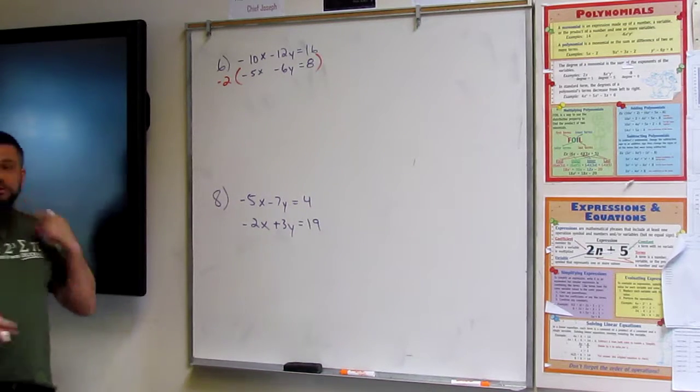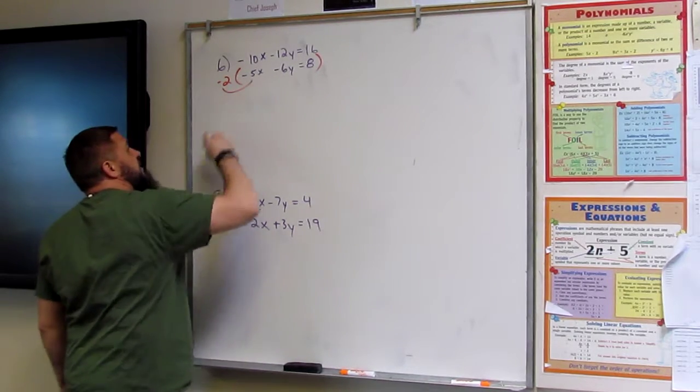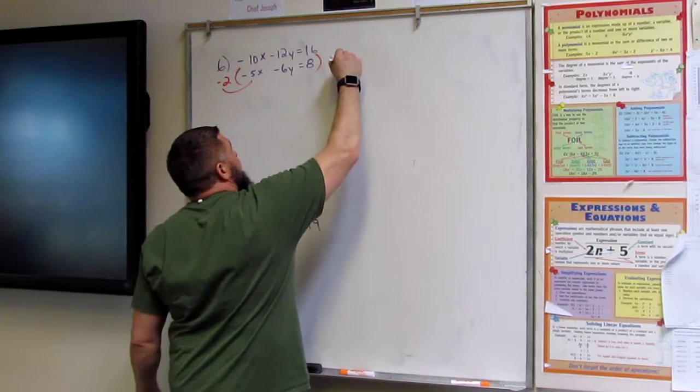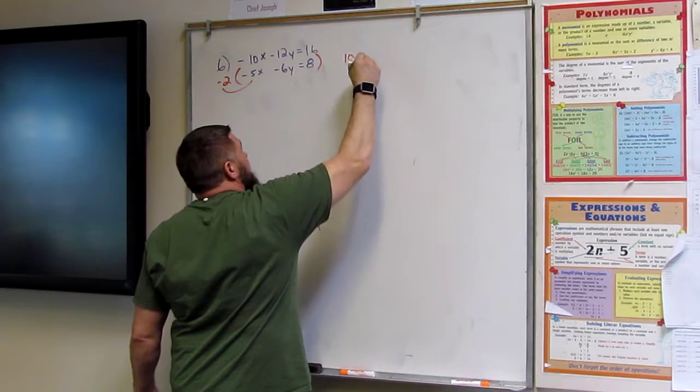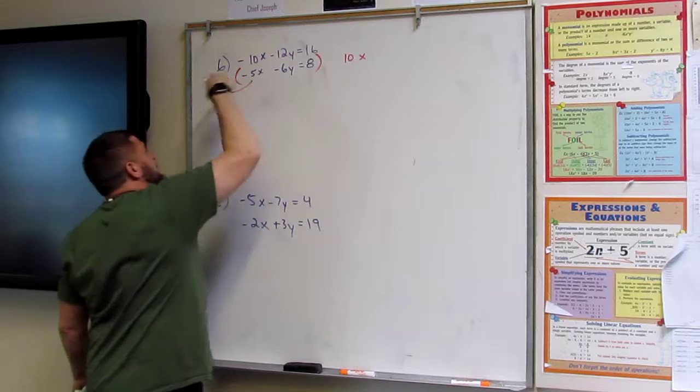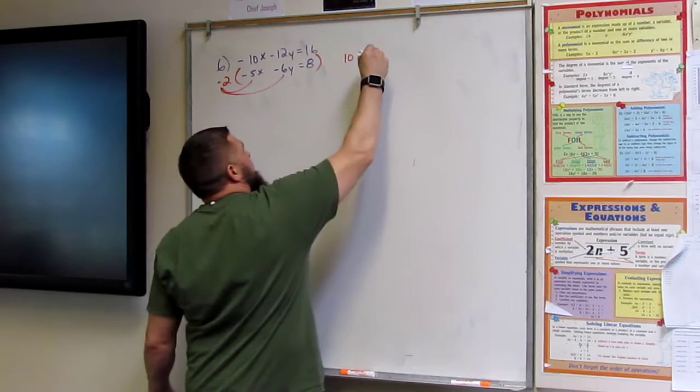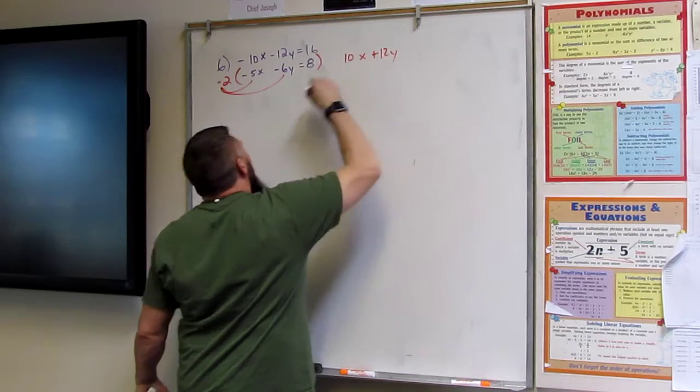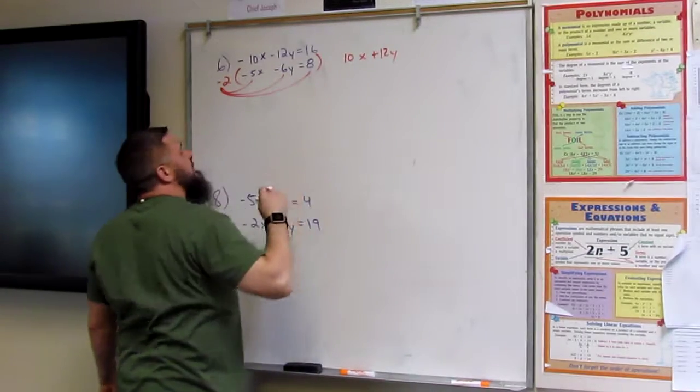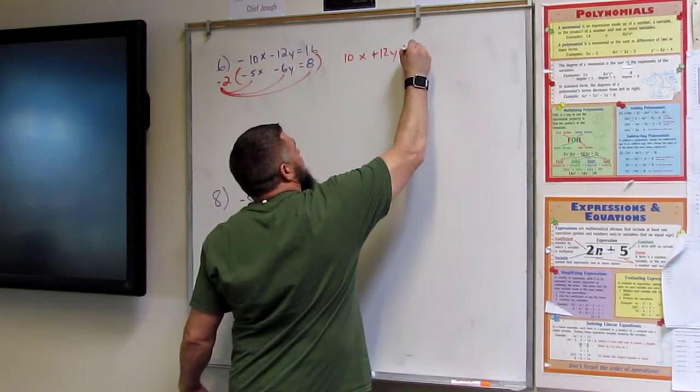And so then I just say negative 2 times negative 5 is positive. Two negatives make a positive. Negative 2 times negative 6 is? Good. And negative 2 times 8? Negative 16.